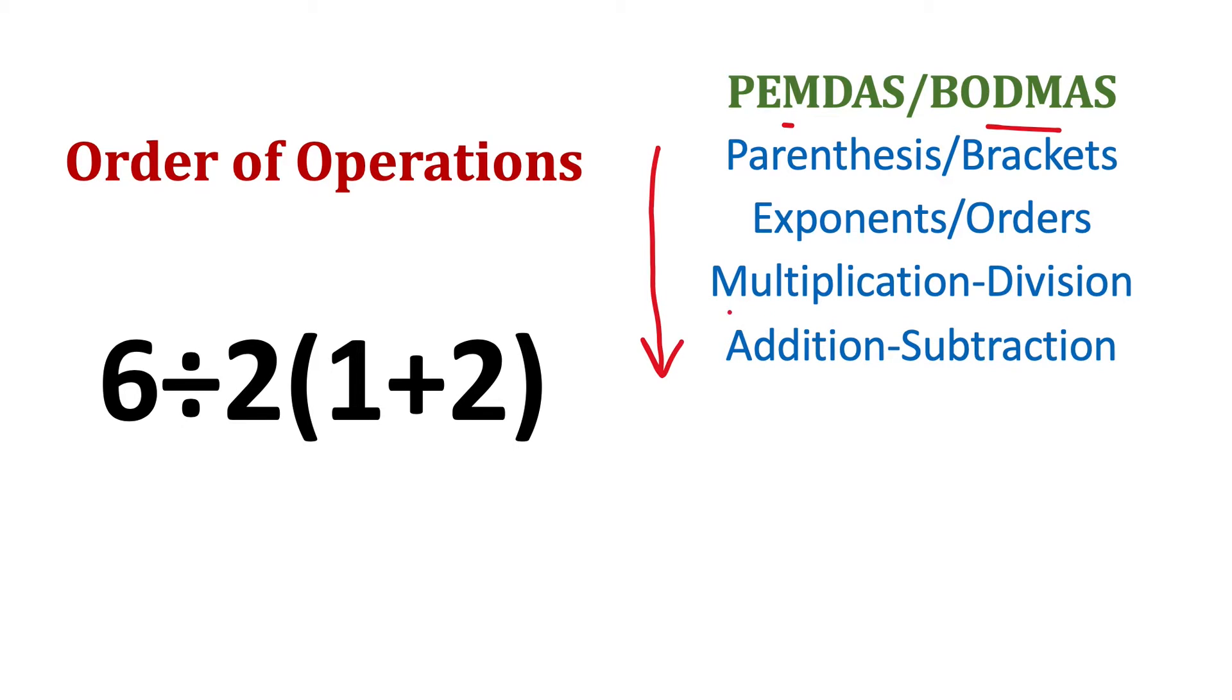Then exponents or orders, and multiplication-division are at the same level. Similarly, addition and subtraction are at the same level. At the same level, we follow from left to right. So whatever operations come first, we evaluate first. So let's evaluate this.